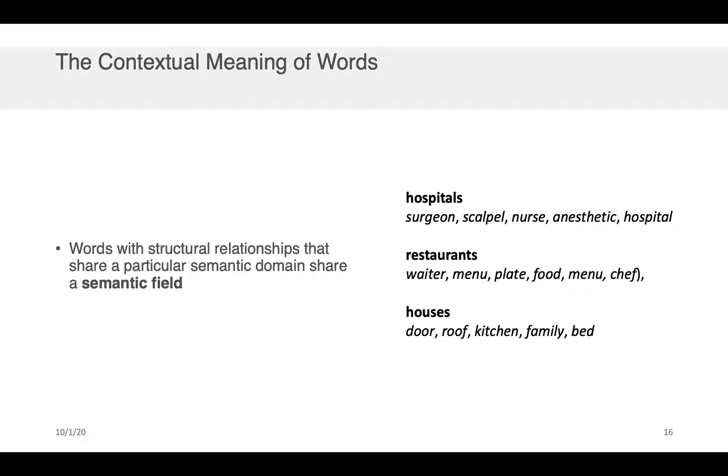Now when we want to talk about relationships between sets of words in NLP, we often will say that they share a semantic field. So for example, hospitals have surgeons, scalpels, nurses, anesthetics. These are all part of a similar semantic field. And you can see a couple of examples there on the right-hand side as well for restaurants and houses.